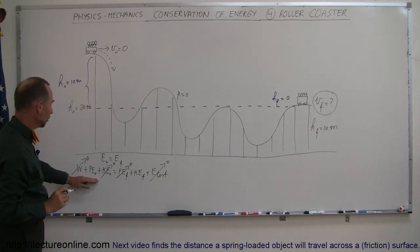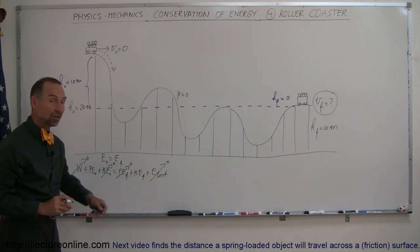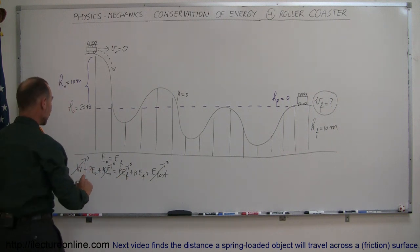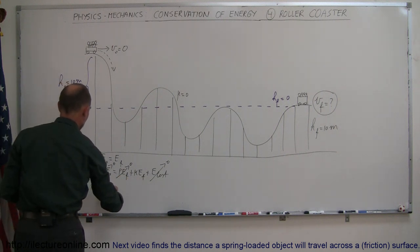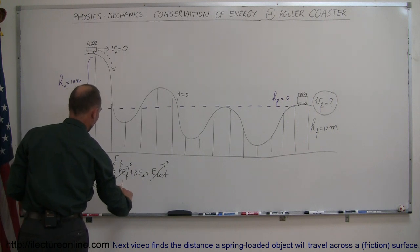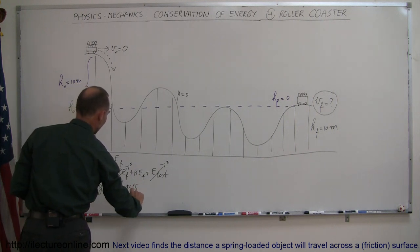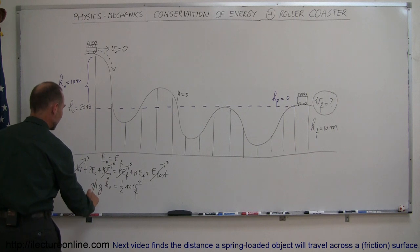So I have initial potential energy, I have final kinetic energy and that's how we're going to solve the problem. So we have mgh initial equals one half mv final squared. Notice that the m cancels out.